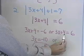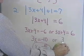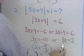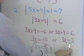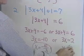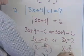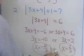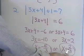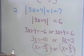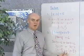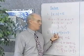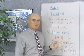Or, add negative 4 to both sides here, and I have 3x is equal to 2. Divide both sides by 3, and I have x is equal to 2 thirds. So I get two solutions: x is equal to negative 10 thirds, or x is equal to 2 thirds. Either one of those two numbers, when I replace x with them in the original equation, will give me a true statement.